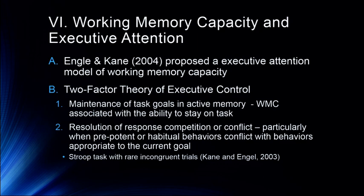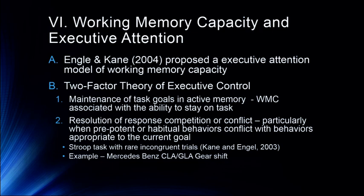Engel and Kane show that the Stroop task gets much harder when incongruent trials are rare. In a congruent trial the color matches the word; in an incongruent trial the color differs from the word. When you go through a full incongruent list you get good at ignoring the word. But when incongruent trials are rare, it becomes much more difficult. People with high levels of working memory capacity are better at this.